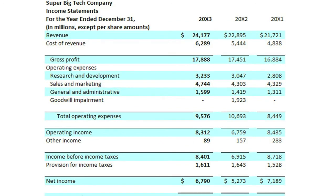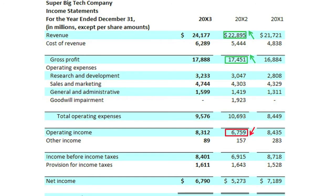Congratulations! You just performed a simple horizontal analysis of SBTC's comparative income statement. Good job! What did you learn from it? Maybe you learned that from 20X1 to 20X2, SBTC's revenues and gross profits grew, but its operating income declined. This is unusual.